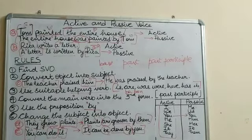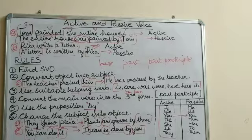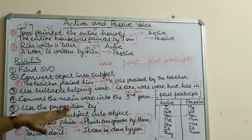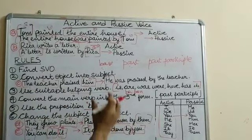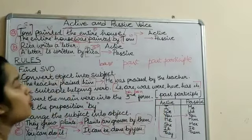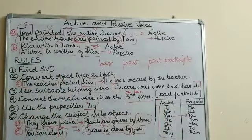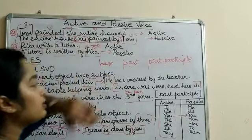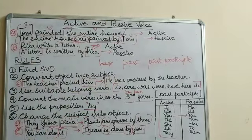In active voice, we have the performer of the action as the subject, while in passive voice we have the receiver of the action as the subject. The third form or past participle form of the main verb is to be used while converting to passive. These are the main points to keep in mind while converting a sentence from active to passive form.